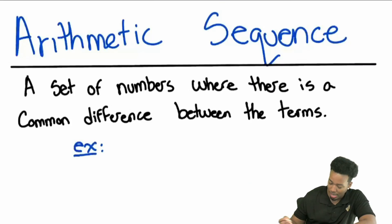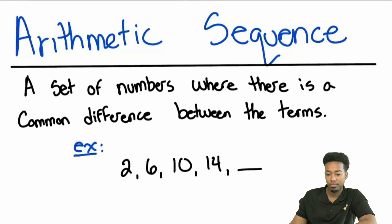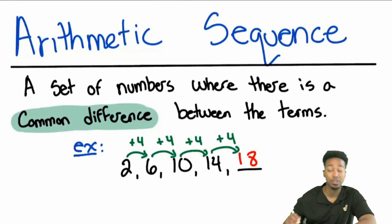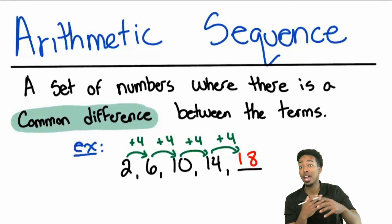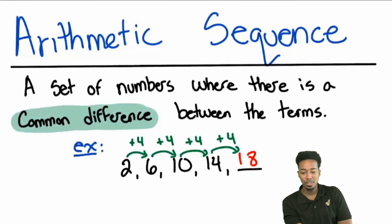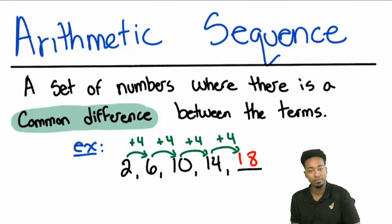An example: we have 2, then 6, then 10, then 14. Based off of this pattern, what would the next number be? That'll be 18, because the common difference was plus four — add four, add four. The same difference from one term to the next. That's the only time where it is grammatically appropriate to say 'it's the same difference.'